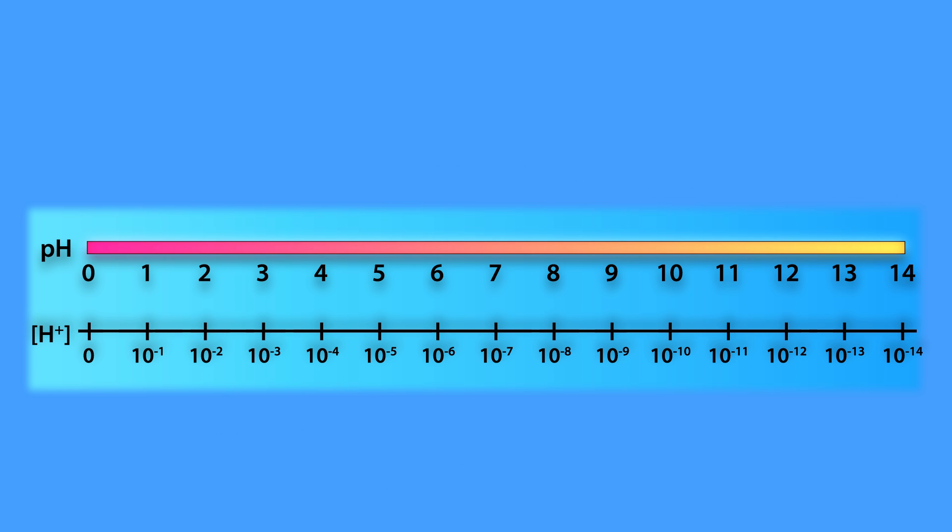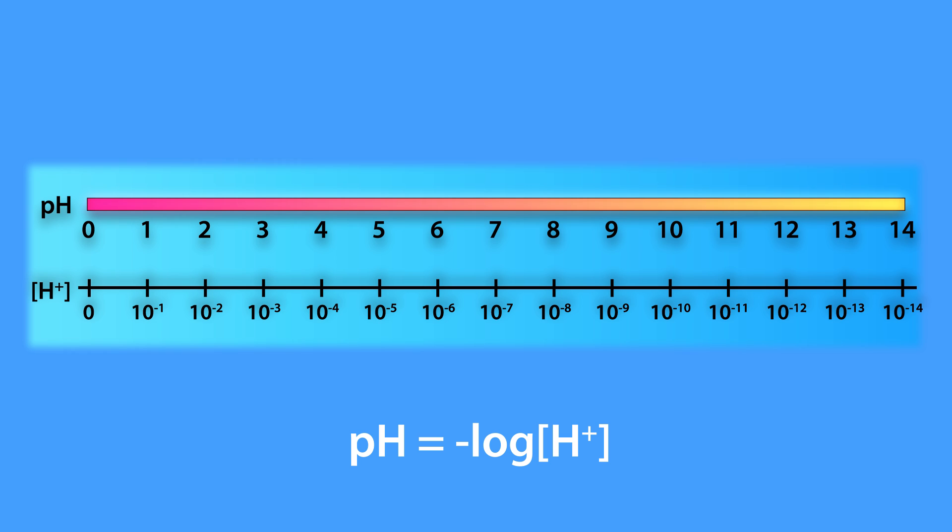Now we can calculate the pH of a given hydrogen ion concentration as well as the hydrogen ion concentration of a given pH using this simple formula, where pH equals the negative log of the hydrogen ion concentration, while the hydrogen ion concentration equals the inverse log of the negative pH.